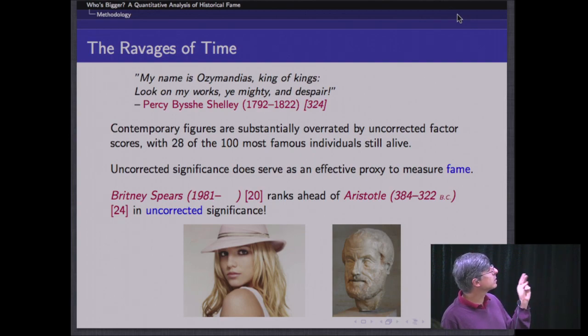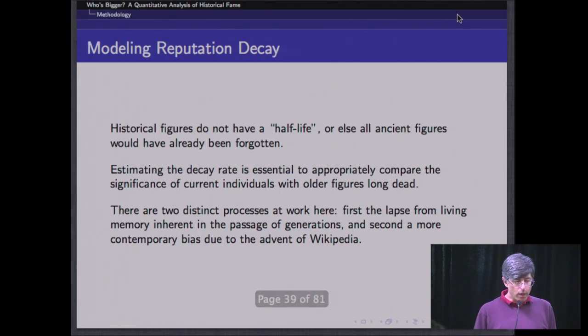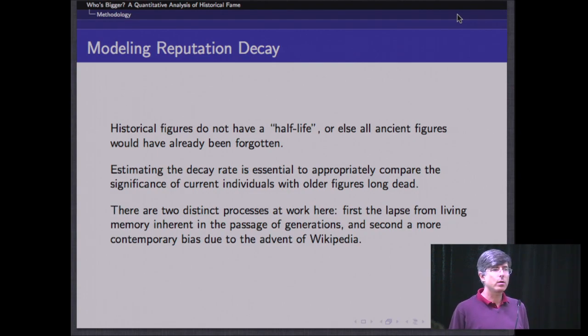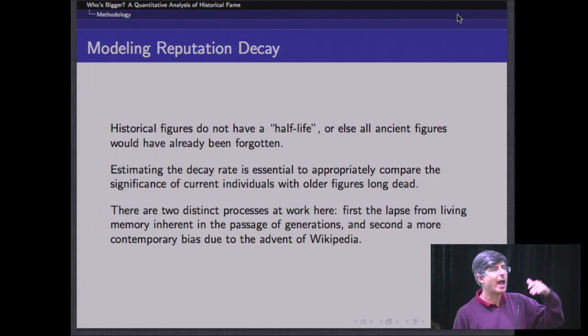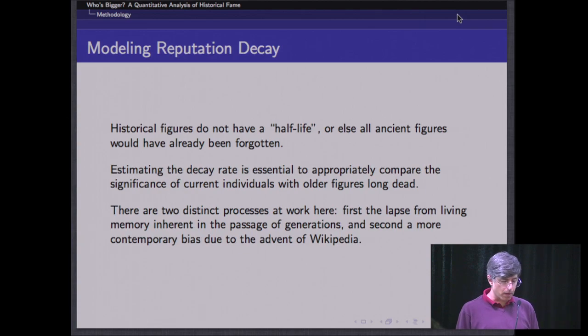If we measure fame by simply adding celebrity and gravitas, we find that we overemphasize people of the present time. By this measure, Britney Spears is more famous than Aristotle, which certainly does not correspond to a notion of historical significance. By our basic fame measure, 28 of the most famous individuals of all time would still be alive. So we wanted to build a model that would factor in reputation decay. Our general sense is that Britney Spears a hundred years from now will probably not be as well known as Aristotle.